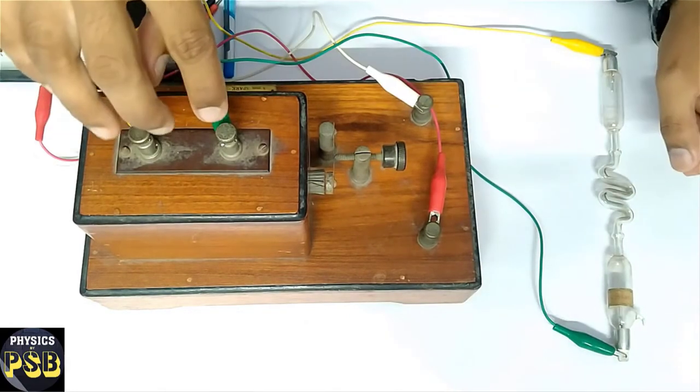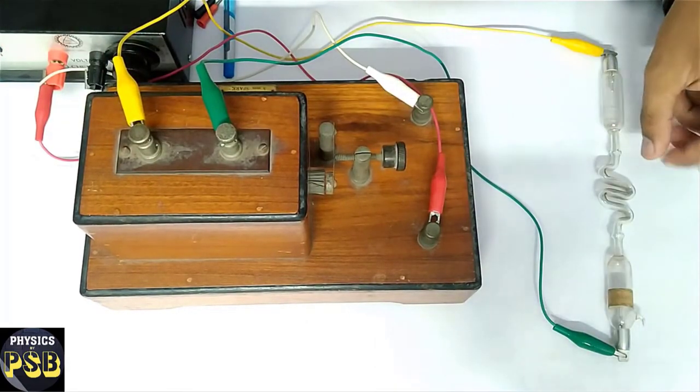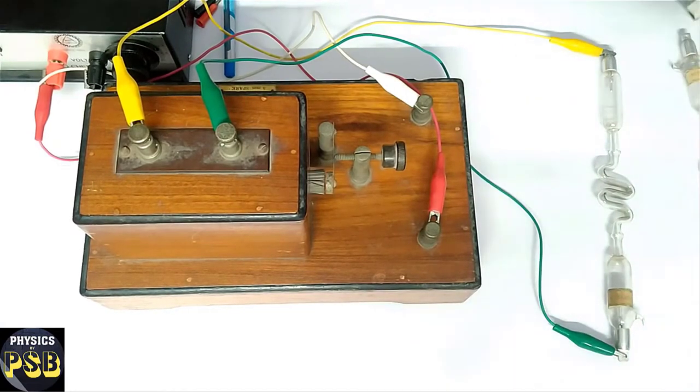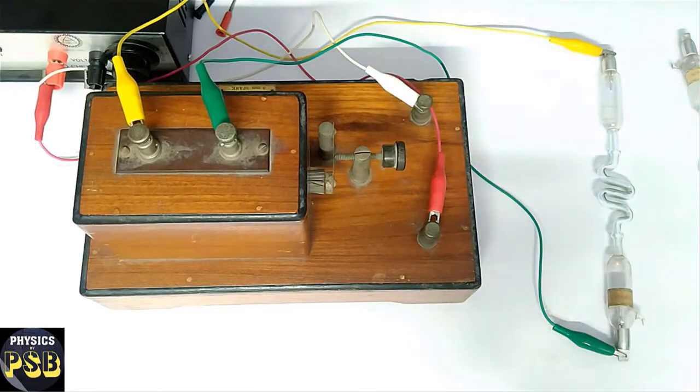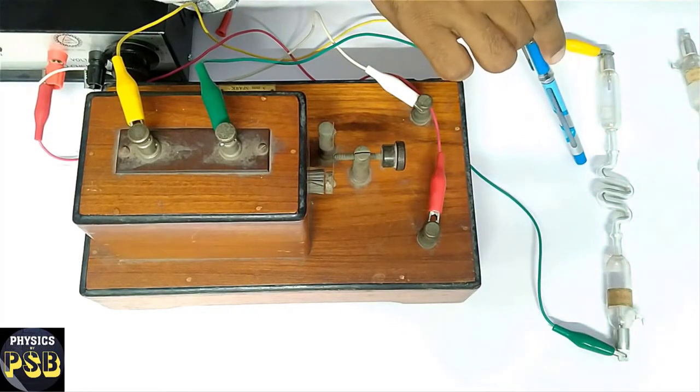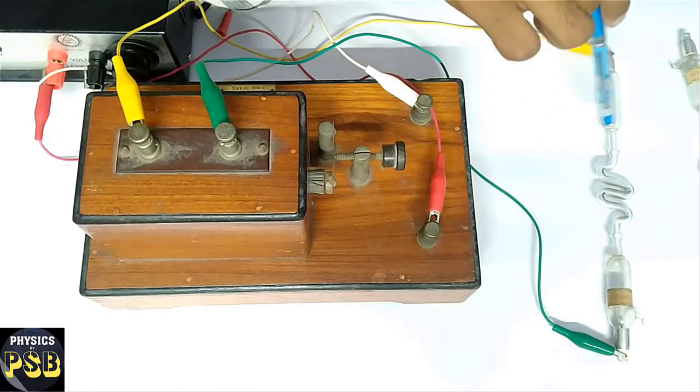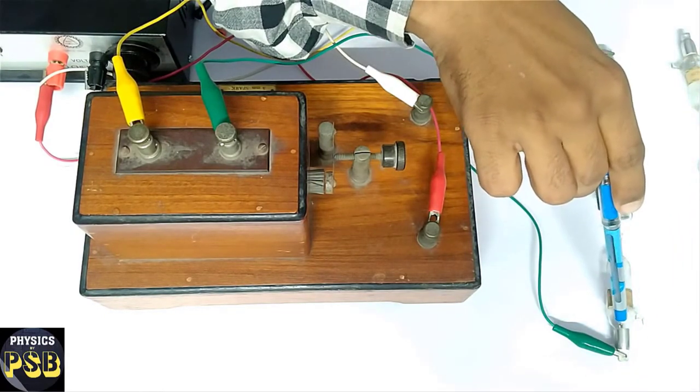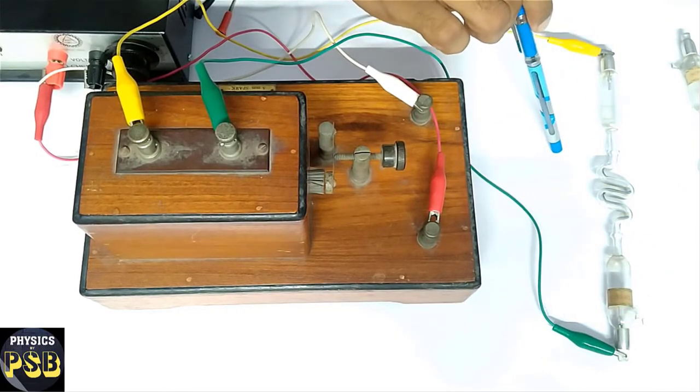I have connected the secondary of this induction coil to the Gieseler tube which is filled with oxygen gas. I switch on the power supply. Here you can see the gas present inside the tube glows. It gives out white light, and the cathode and anode emit blue light. For better visibility, I will switch off the light. It emits light blue color light.